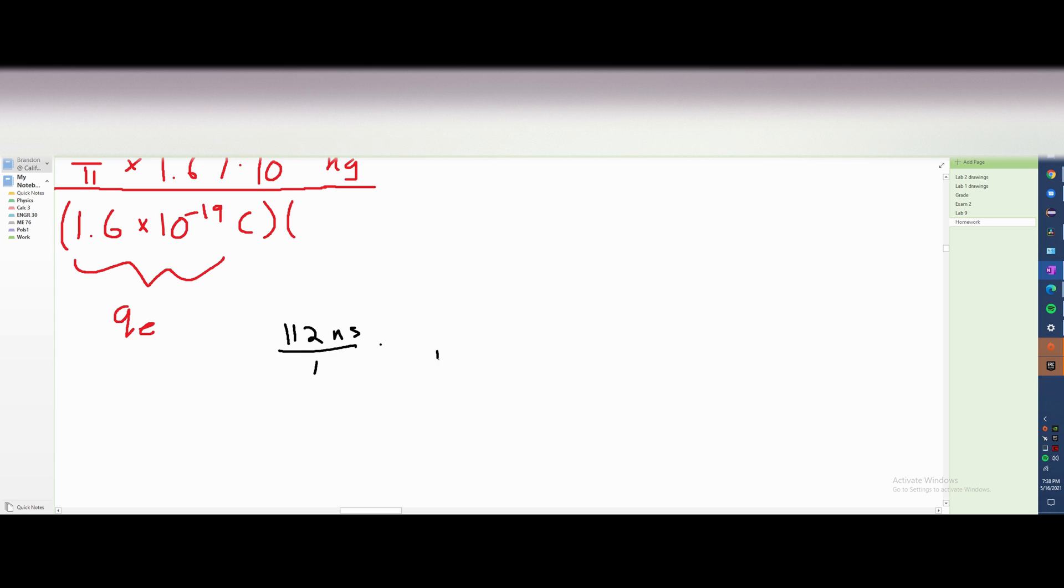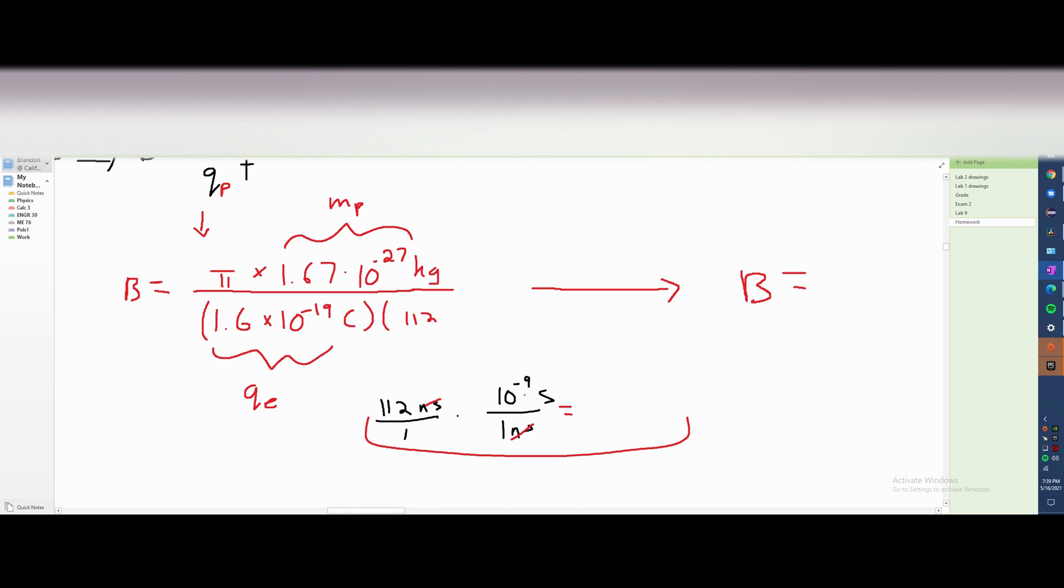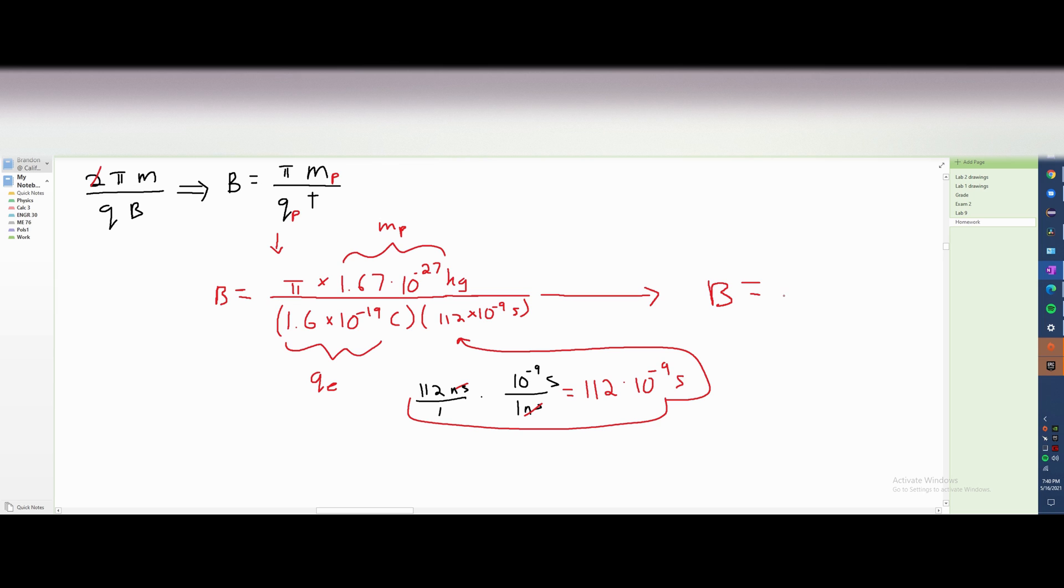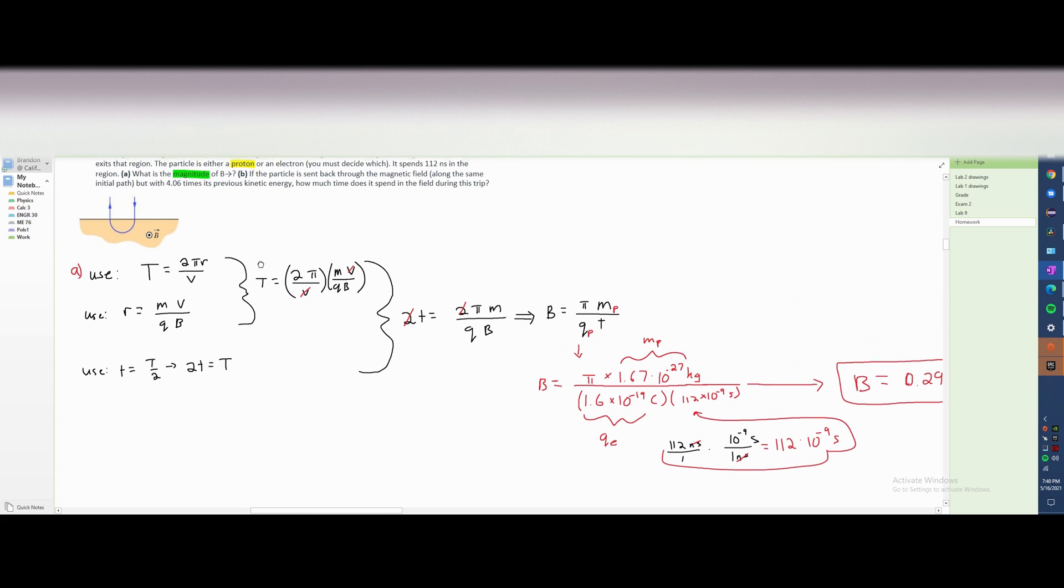So we're going to multiply this by 1 nanosecond to get rid of this. And there are 10 to the negative 9 seconds for our nanoseconds. So this is just going to give us 112 times 10 to the negative 9 seconds. And this is going to go into here. And once we have all that put into our calculator, we're going to get approximately 0.29 T for our magnitude B for part A.